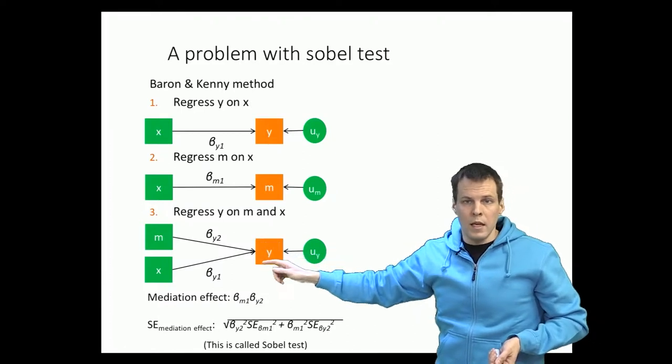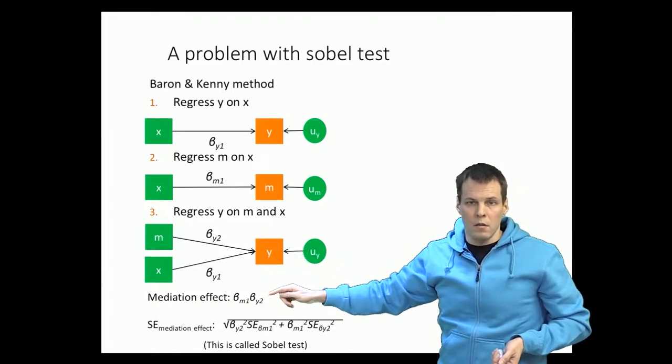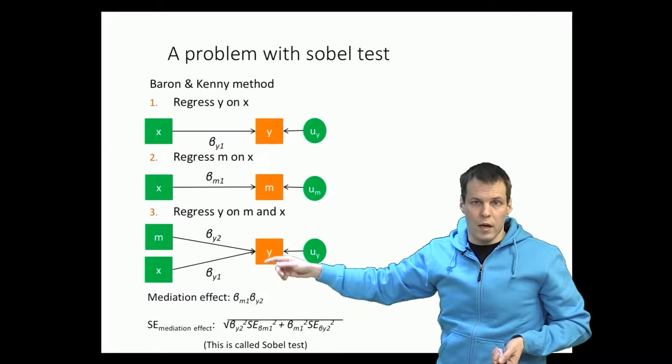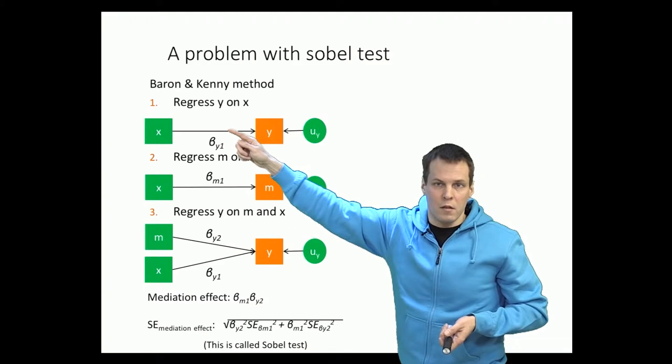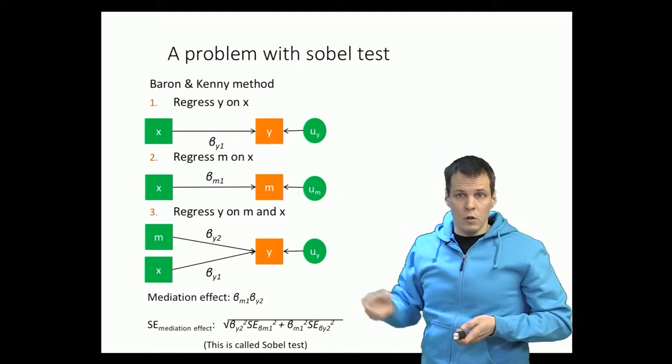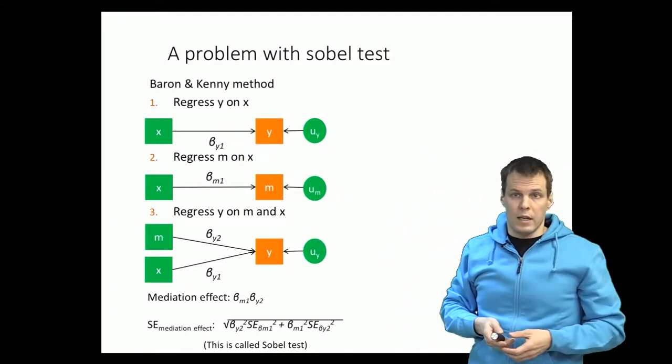So the mediation effect is beta m1 times beta y2. You multiply this regression coefficient from m to y and this regression coefficient of x on y together, and that's the mediation effect.